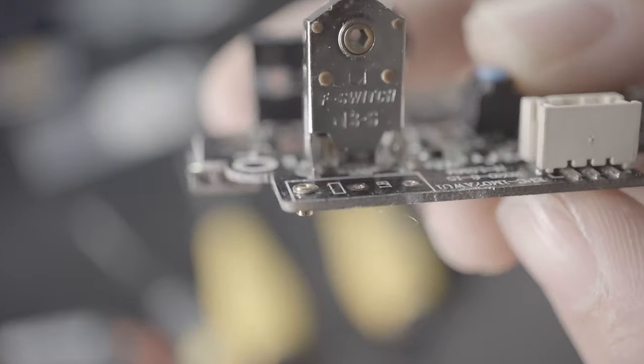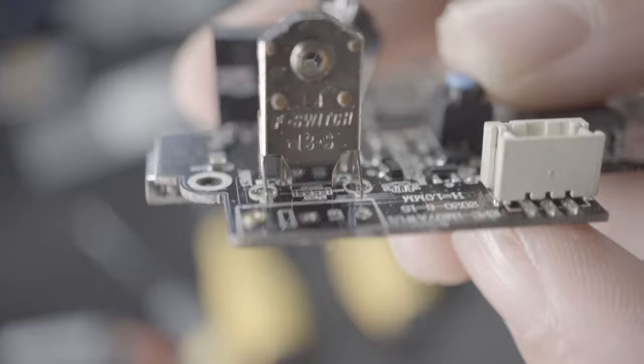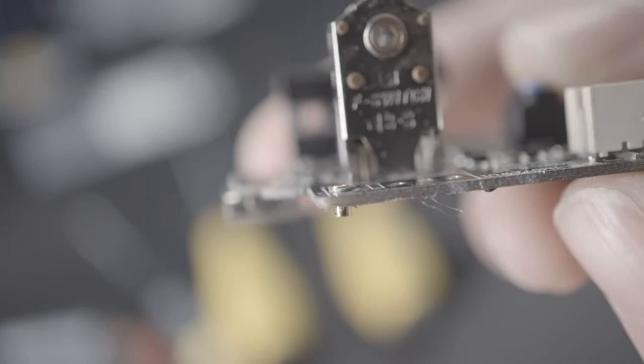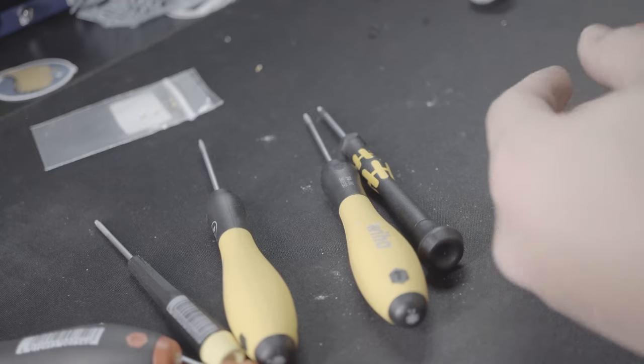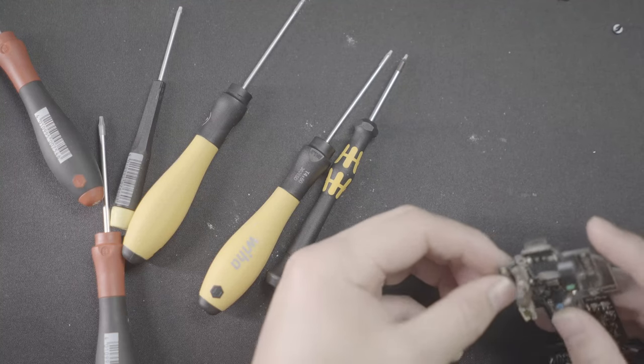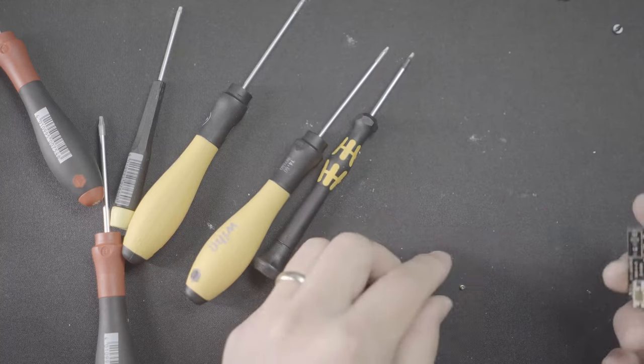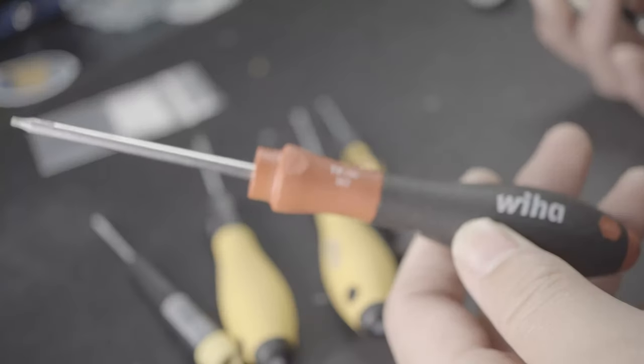But basically, if you try to insert a Milmax socket, right now you can see that the Milmax socket is inserted. The problem is, there's a lip. And even though that lip is probably like a millimeter, it doesn't seem like it would be that important. That one millimeter is going to prevent your mouse from actuating properly.